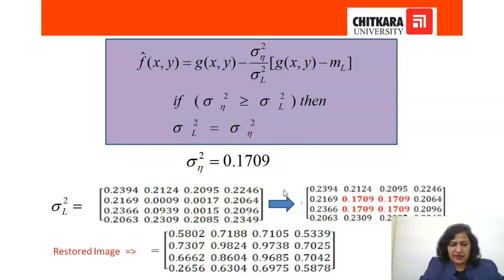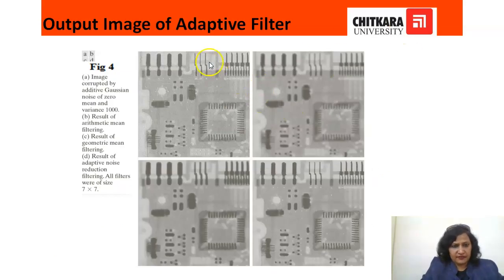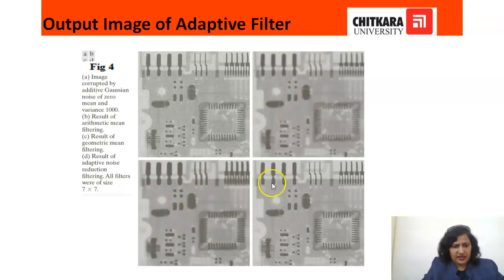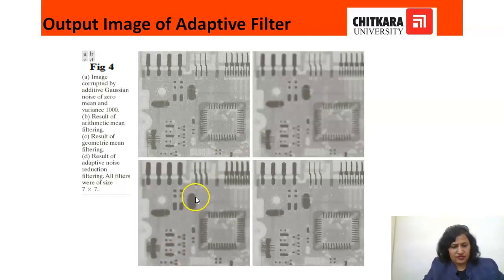So this mathematical example is just to show what is working at the backend of the adaptive filter. These are the results: this is the image restored using the adaptive filter. By visualizing it, it is very clear that the adaptive filter is much much better as compared to the original noisy image.